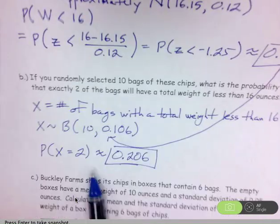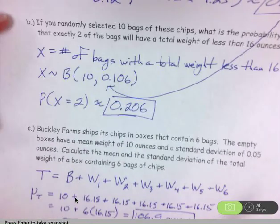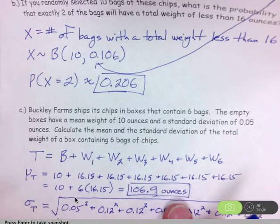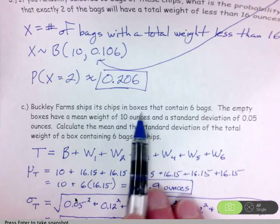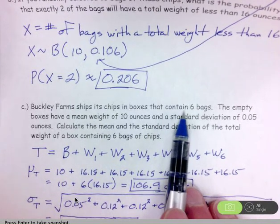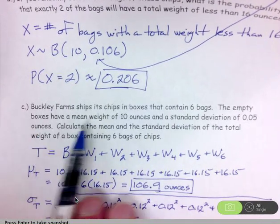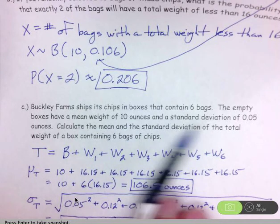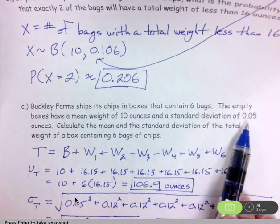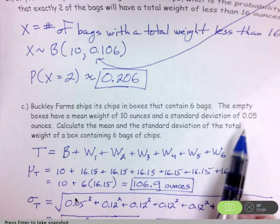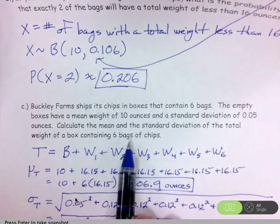So last part of the question then, we are looking at a combination then of random variables. So we are shipping these bags of chips in boxes. Each box has six bags. So the empty boxes have a mean weight of 10 ounces and a standard deviation of 0.05 ounces. So I want the mean and the standard deviation for the total weight of the box containing six bags of chips.